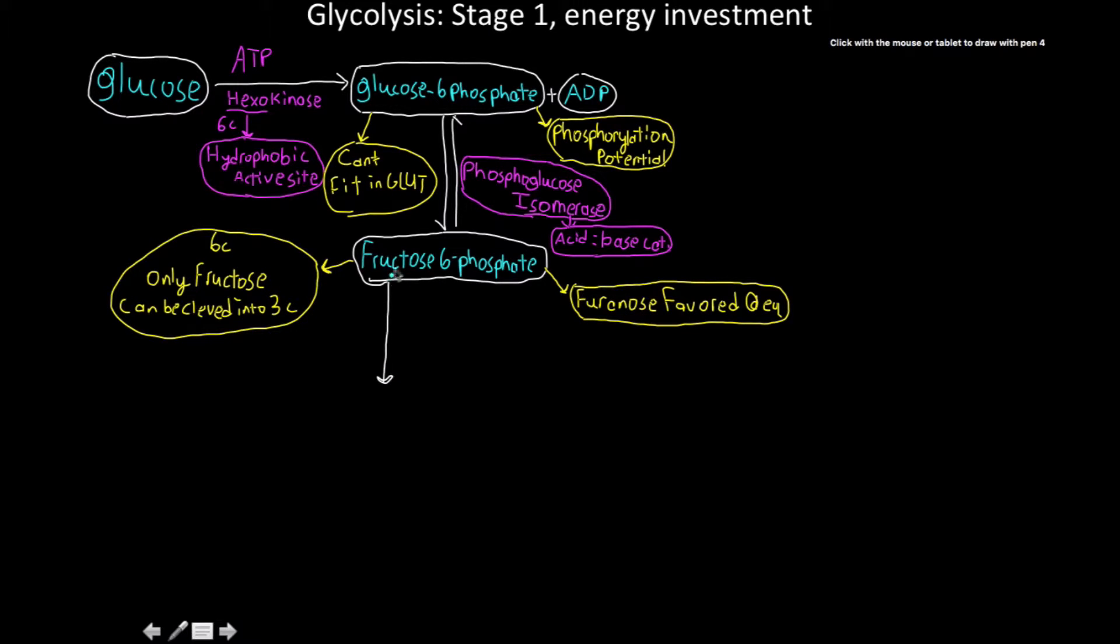The next reaction is to go from fructose-6-phosphate to fructose-1-6-bisphosphate. We've added another phosphate group to it. What have we done? Well, we've had to use ATP for this reaction, obviously. That's why this is called the energy investment phase. And as you can imagine, another type of kinase. The new type of kinase is called phosphofructokinase, or PFK for short.